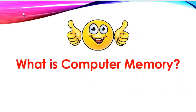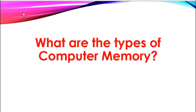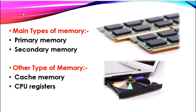We can define computer memory as a physical device or place capable of storing information either temporarily or permanently. We can also say they are devices which can retain data for a given period of time. The computer memory is classified into four types. The two main types are primary memory and secondary memory, and the other two types are cache memory and CPU registers. To understand this classification, we will use the memory hierarchy diagram.